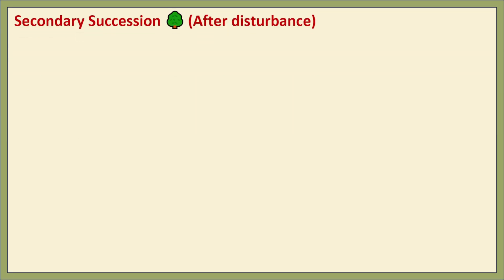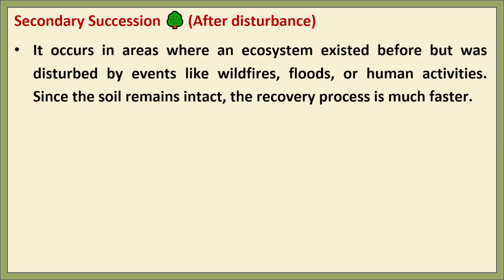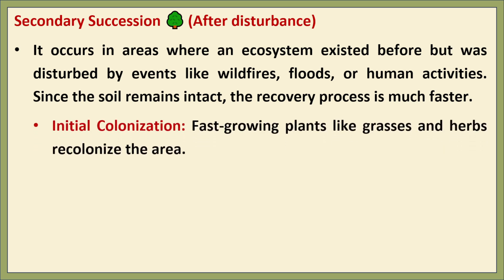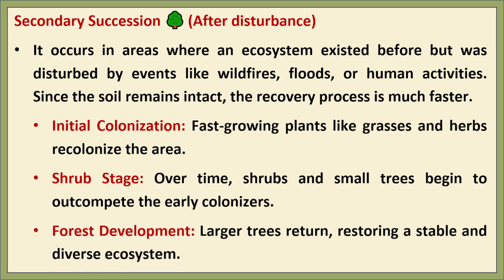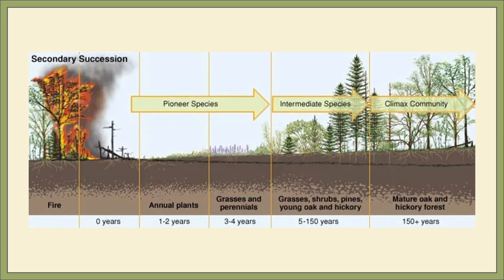The second type is secondary succession, which occurs in an area where a disturbance such as fire, flood, or human activities has destroyed an existing community but left the soil intact. The first step is initial colonization, where fast-growing herbaceous plants and grasses are usually the first to recolonize the area. Over time, shrubs and small trees begin to grow, outcompeting the initial colonizers. Finally, larger trees dominate the area, leading to the re-establishment of a forest or other stable ecosystem. This diagram illustrates secondary succession beginning with dead plants and progressing through multiple stages before forming a stable ecosystem.